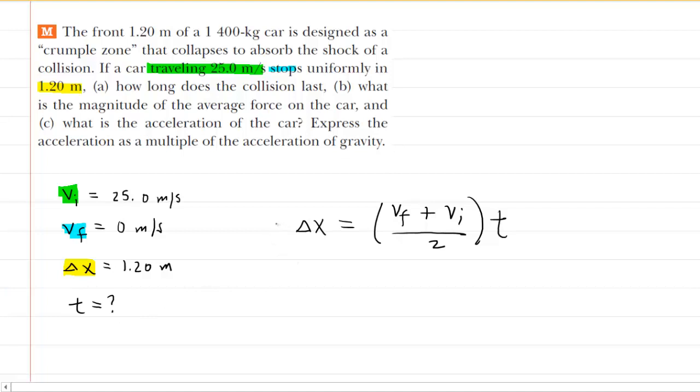We recall from the kinematics chapter that we know the displacement is equal to the average velocity, which is this whole term right here, multiplied by the time. So what we want to do is solve this equation for time. If you look carefully, you have a division by 2 right here, so we're going to multiply both sides of this equation by 2 so that the 2 in the denominator and the 2 in the numerator right there would cancel.